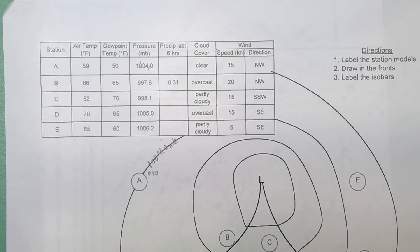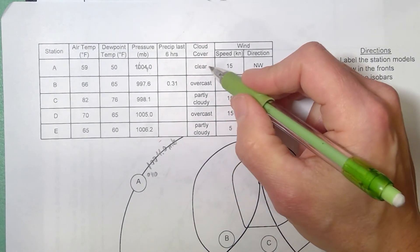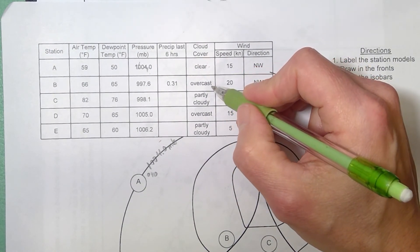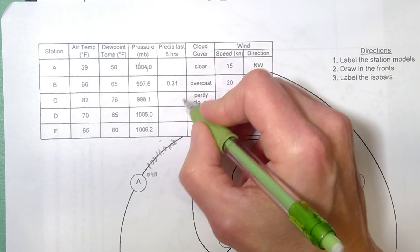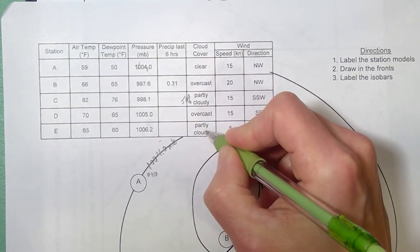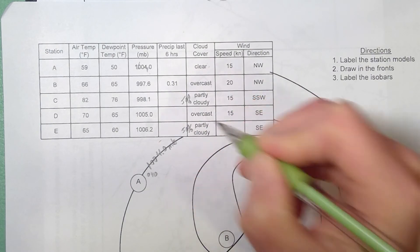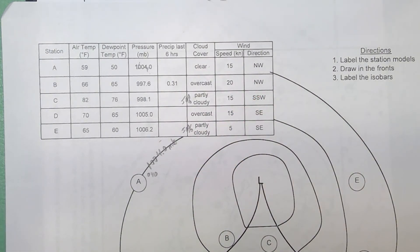A couple of questions you might have: What does it mean to be clear? Clear would be 0%. Overcast would be 100%. Partly cloudy is from 26 to 50%. But for this activity, we'll just say that the two that are partly cloudy, I'd like you to plot at 50%. So at this point, you should definitely have the skills to draw all five of the station models, label the isobars, and label the fronts. It's going to be a nice, classic, low-pressure cyclonic storm system.